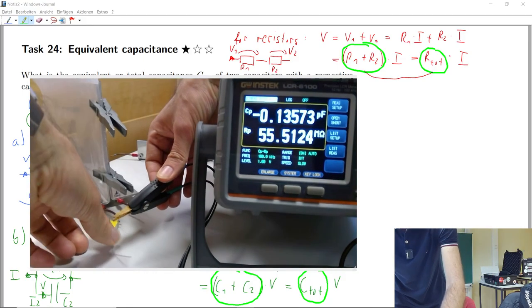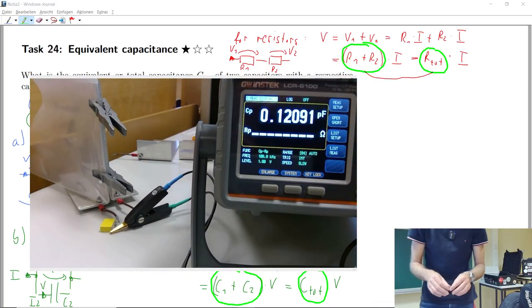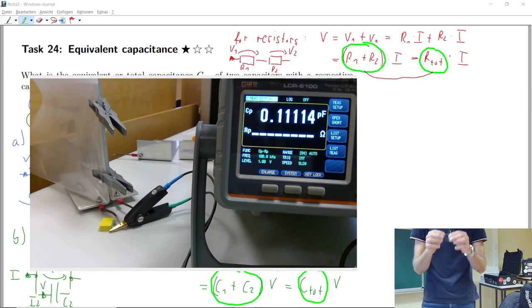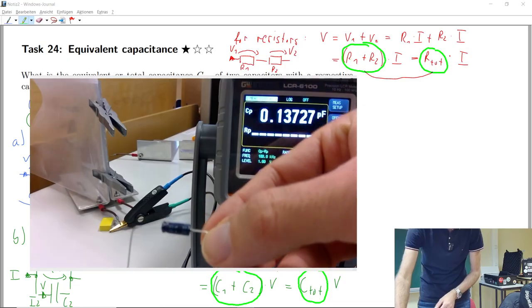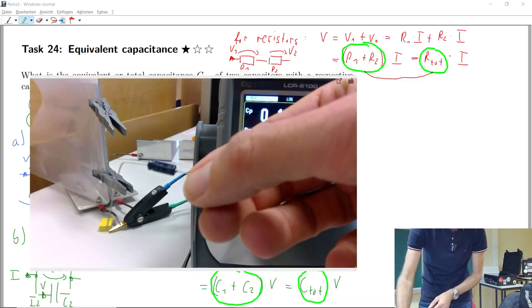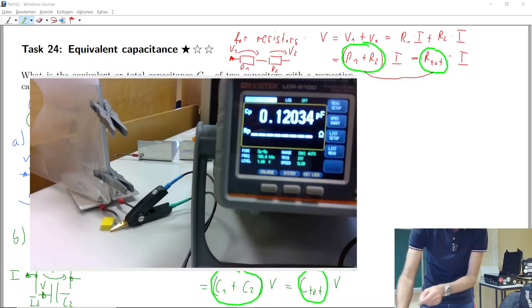And it does not because I think this electrolytic capacitor just works for DC and we would need to apply some DC voltage before. So that's why they have also a marking like a diode. What is the plus and what is the minus side?